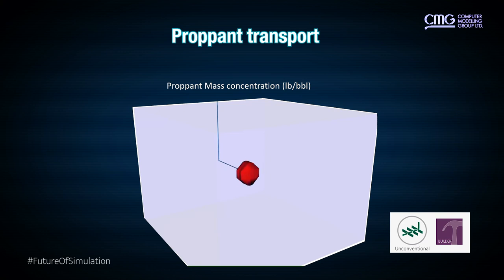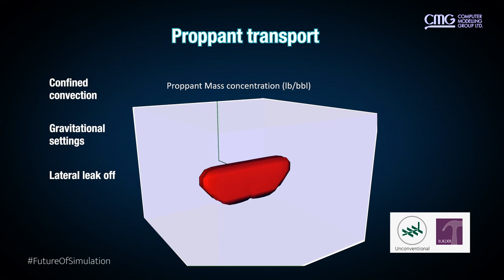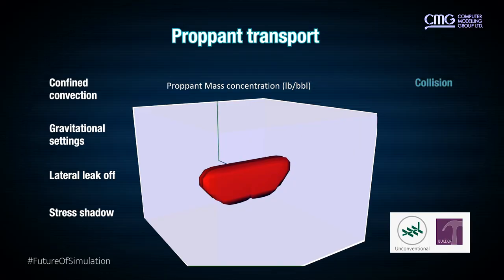Speaking of proppant, we now have a proppant transport model that can model behaviors such as confinement, convection, gravitational settling, and lateral leak-off and stress shadow — all important in how we model proppant transport. Additionally, particle effects such as collision, bridging, packing, and crushing are also being modeled to give a full picture of where the proppant is going and what is happening to it. Proppant modeling can now be done without any limitations like presetting the half-lengths, unloading and reloading data, or the complexities and runtime of a geomechanical model.